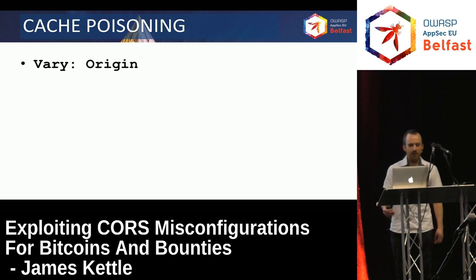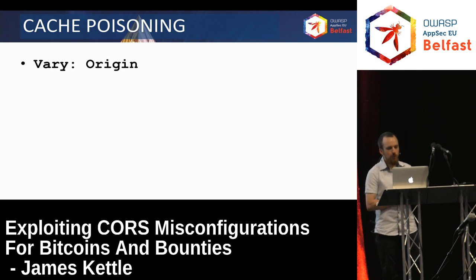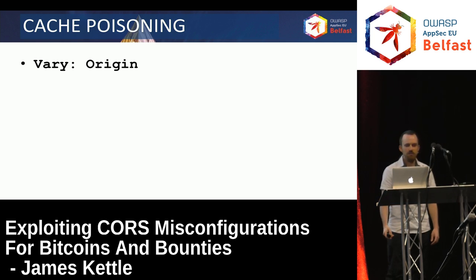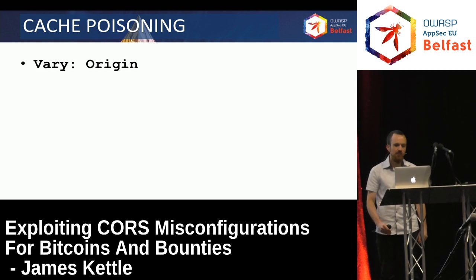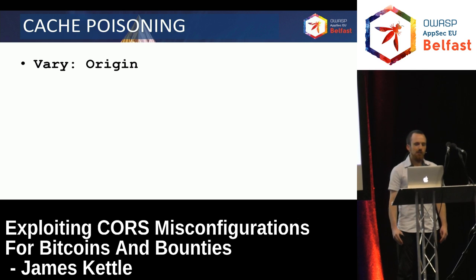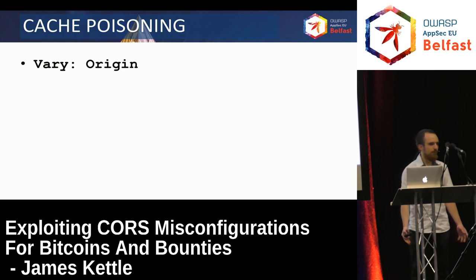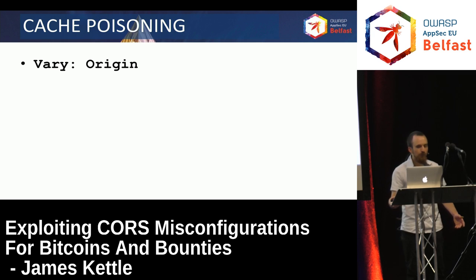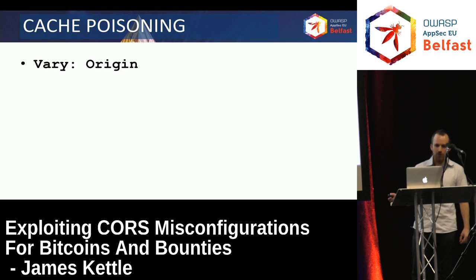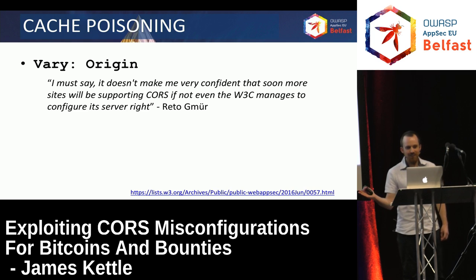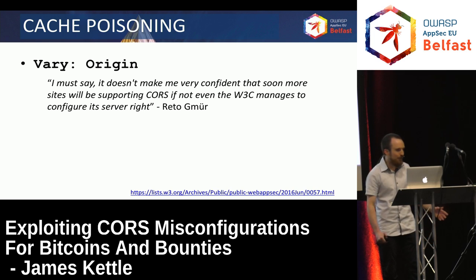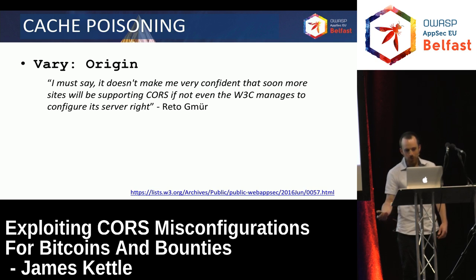If you read the CORS specification, you'll find a section titled 'Implementation Considerations,' and that's a code word for hackers — please pay attention to this section. It says: if you dynamically generate the allow-origin header, make sure you specify Vary: Origin. If you don't, then something may go wrong. You might think specifying a static header — who could fail to do that? That sounds really easy. And I guess it is pretty easy. Probably the first people to fail to do this were the W3C, leading to this brilliant quote: it doesn't make me very confident that soon more sites will be supporting CORS, if not even the W3C manages to configure its server correctly.